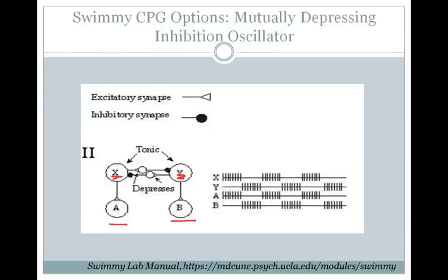So X excites an inhibitory interneuron which inhibits Y, and vice versa. You can get oscillating behavior if you have synaptic depression at the synapse between Y and its inhibitory interneuron and X and its inhibitory interneuron. If X is firing, Y is going to be inhibited until there is enough synaptic depression at the interneuron between X and Y. Once the synaptic depression occurs, the inhibition on Y is removed, and Y can start firing. Y fires until the synaptic depression between it and its interneuron is enough to remove the inhibition on X, and then X starts to fire again. Since X is hooked up to motor neuron A, A fires when X fires; Y is hooked up to motor neuron B, so B fires when Y fires, giving you this alternating locomotor behavior.